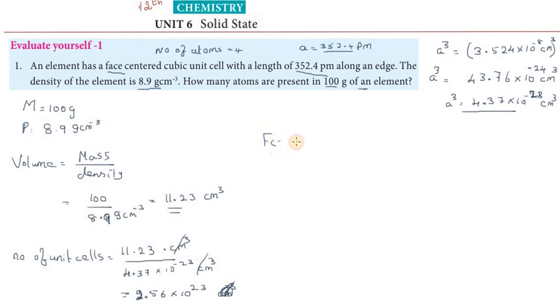FCC contains 4 atoms. FCC contains 4 atoms. So 4 into 2.56 multiplied by 4.